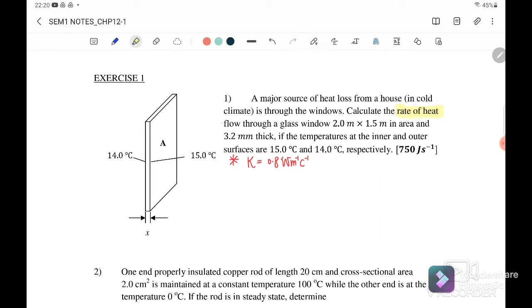They give you the area and also the thickness. So we can write dQ/dt equals negative kA dT/dx, where k is 0.8.